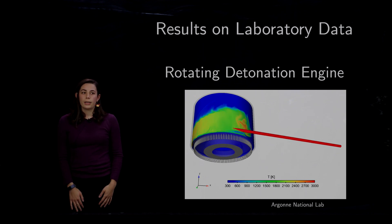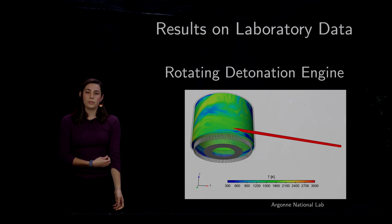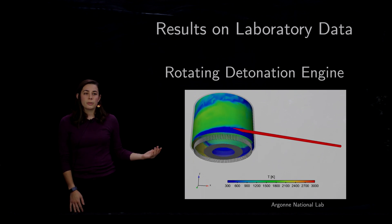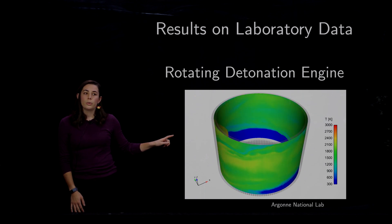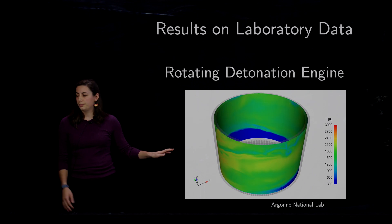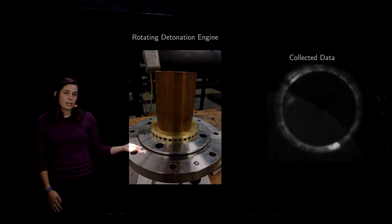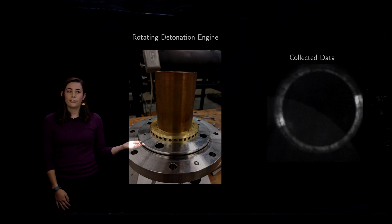So that's great. We've been able to validate our system on some simulated data. But what we really want to be able to use this method on is some real laboratory data or data taken from experiments. So the experimental data that we ended up using to validate our method was from a rotating detonation engine. So here we have an example of a simulation of a rotating detonation engine, which has this shock wave that travels around the annulus of the chamber.